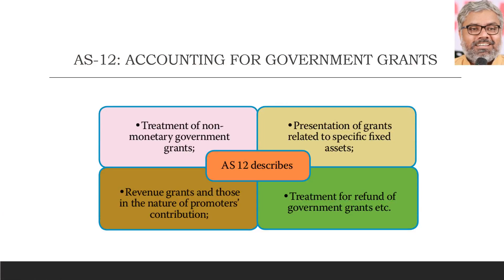When the organization receives certain types of government grants, how to treat those government grants in the books of accounts — basically this is more of a recognition-related standard. In other words, the basic accounting treatment, that is, journal entries of government grants, are prescribed by this particular standard. The standard will tell the treatment, from which we have to understand and write journal entries when an organization receives government grants.